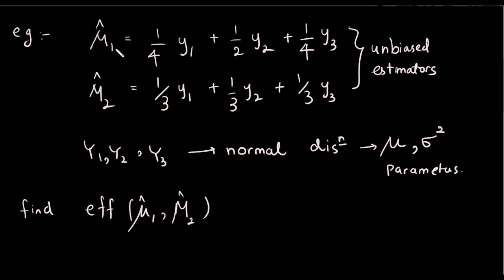For example, here we have mu1 hat and mu2 hat. We can define the unbiased estimators with variables y1, y2, y3. This is mu1 hat and mu2 hat as unbiased estimators, and these are the expectation values of the parameter.